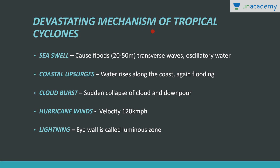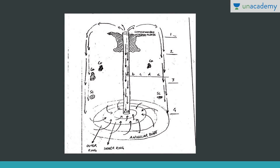The devastating mechanisms of tropical cyclones include: sea swell that causes flooding, coastal upsurges where water rises along the coast leading to flooding, cloud burst conditions, heavy downpour, and hurricane winds with velocity in the range of 120 km per hour. They also lead to lightning due to cumulonimbus clouds, mainly in the eye wall region.